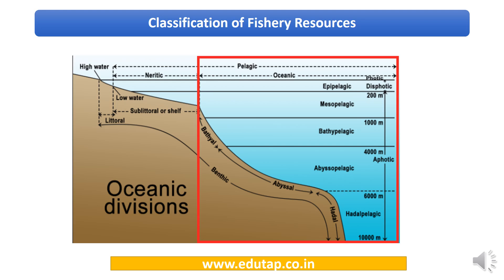There is also the littoral zone — the zone between the high tide and low tide. The pelagic zone has a vertical classification by depth: epipelagic, mesopelagic, bathypelagic, abyssopelagic, and hadal pelagic. Horizontally, the pelagic zone is divided into neritic (water column above the continental shelf) and oceanic (the deeper water column of the open ocean).